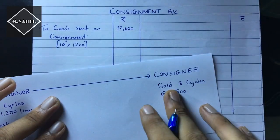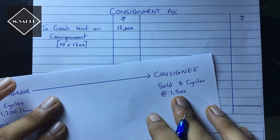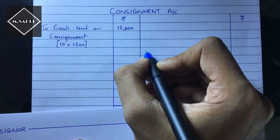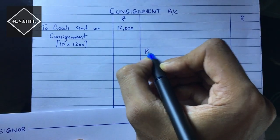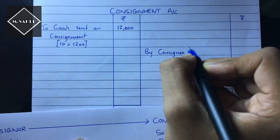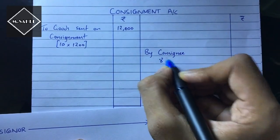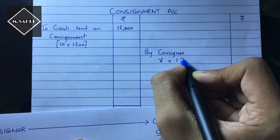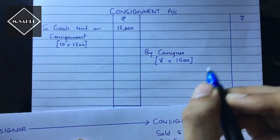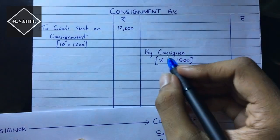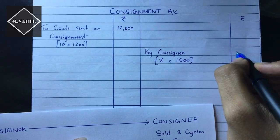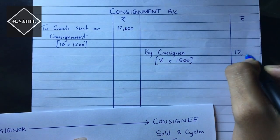The consignee sold 8 cycles at the price 1500. So the sales will come on the credit side as 'by consignee' — which is 8 into 1500 is equal to 12,000.